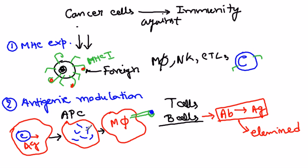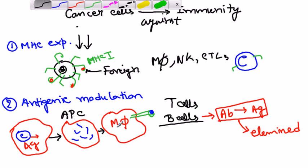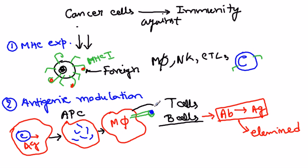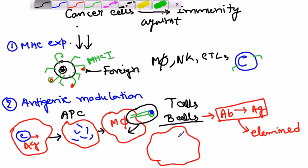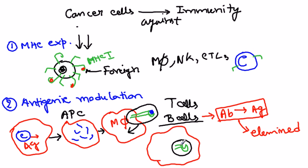Now, if cancer cells minimize the expression of all these antigens processed inside, other cells cannot recognize them. In antigenic modulation, cancer cells modulate the expression of MHC class 2 molecules holding antigens outside — they re-engulf the MHC-antigen complexes back inside the cell. As a result, the macrophage now has vesicles inside containing antigens with MHC molecules hidden within. This is called antigenic modulation, helping cancer cells evade immune response.